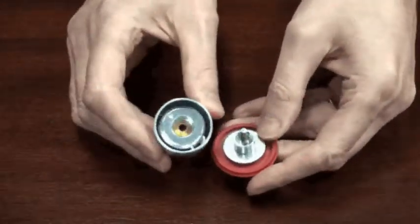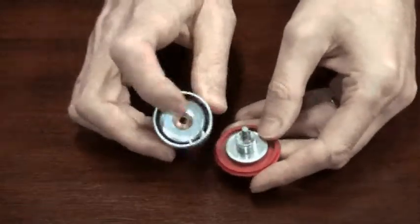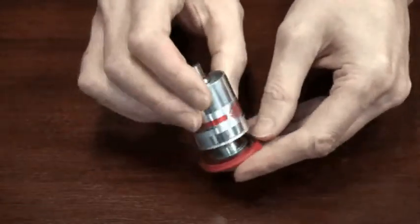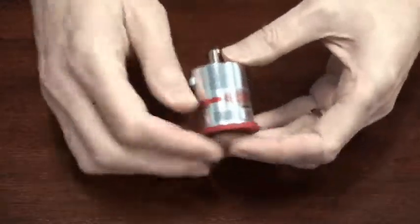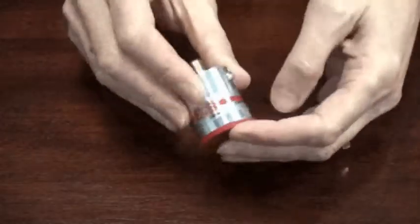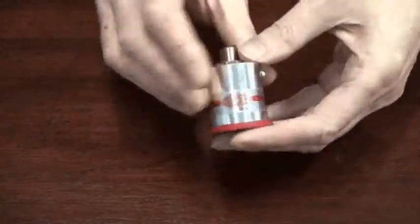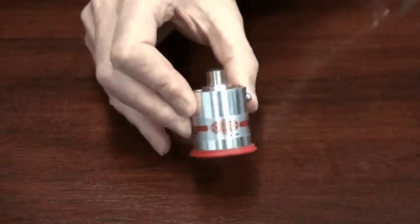Then reinstall the shaft into the bushing in the center and then re-engage the lip around the groove on the bottom. Simple as that.